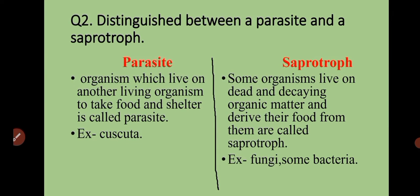Second question is: distinguish between a parasite and a saprotroph. Organisms which live on another living organism to take food and shelter are called parasites. Example: Cuscuta. Saprotrophs are organisms that live on dead and decaying organic matter — like dead animals, fallen leaves, rotting fruits in forests — and derive their nutrients from them by breaking down complex forms into simple forms. Example: fungi and some bacteria.